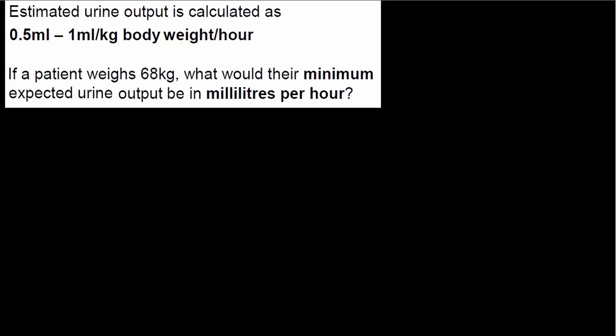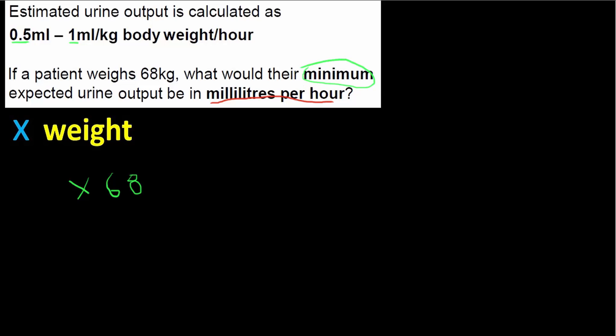Question four: estimated urine output is calculated as 0.5 to 1 millilitre per kilogram body weight per hour. If a patient weighs 68 kilograms, what would their minimum expected urine output be in millilitres per hour? For any weight-dependent question we simply multiply by the weight. The key word is 'minimum' — the minimum of the range 0.5 to 1 is 0.5, so I'll do 0.5 times 68.